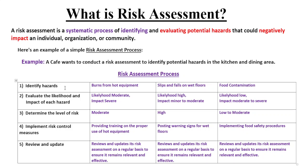The first step involves identifying potential hazards that could cause harm. In our cafe example, the possible hazards identified are: burns from hot equipment, slips and falls on wet floors, and food contamination. So the risk manager or risk analyst identifies these three hazards — burns from hot equipment, slips and falls on wet floors, and food contamination.